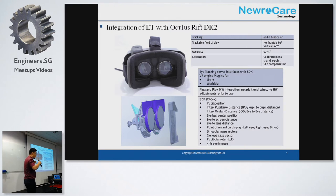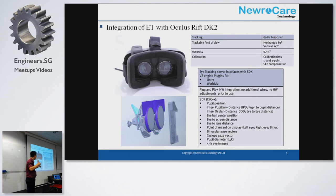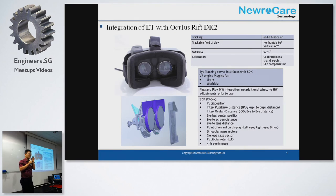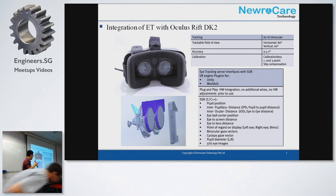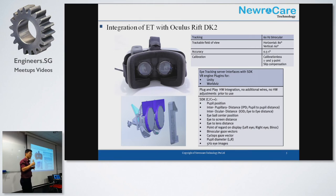The parameters we can provide for the developer — and bear in mind this solution is for developers, not for consumers — include: pupil position, inter-pupillary distance, inter-ocular distance, eyeball center position, gaze vectors for single eye or both eyes, pupil diameters, and eye images. Developers can use all of these parameters to trigger feedback or divert scenes to different storytelling.